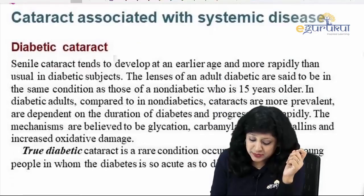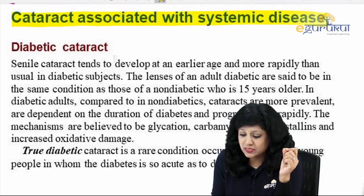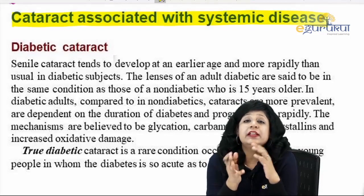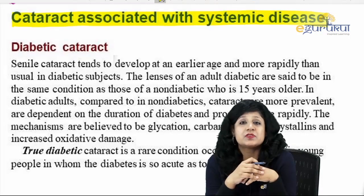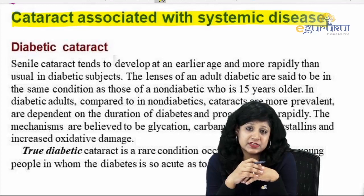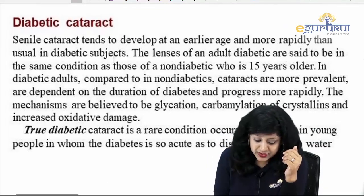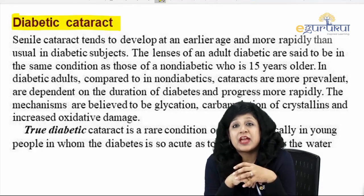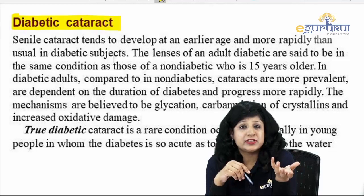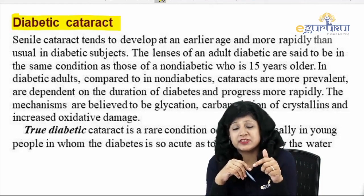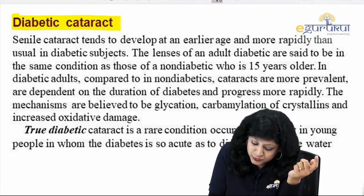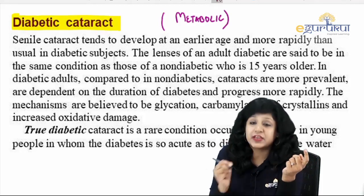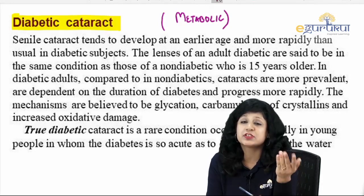Now we shift to cataracts associated with systemic diseases. Not only ocular diseases but also systemic diseases are related to cataract. First, consider the diabetic cataract. All patients with diabetes — this can be classified under metabolic diseases — so it is also a kind of metabolic cataract. Do not get confused when they say metabolic cataract and also say systemic disease, because it is a metabolic systemic disease.